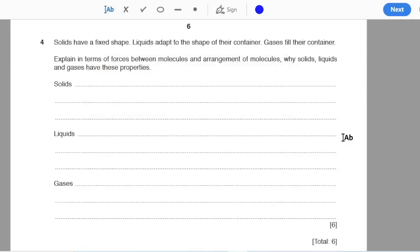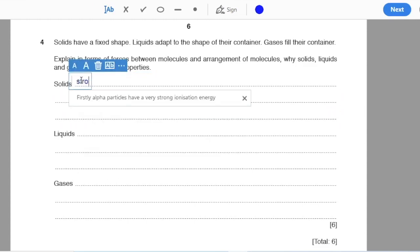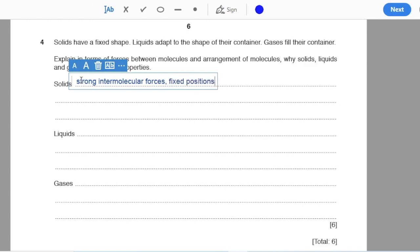Question four: solids have a fixed shape, liquids adapt to the shape of their containers, gases fill their container. Explain in terms of forces between molecules and arrangement of molecules why solids, liquids and gases have these properties. Since this question has been assigned six marks, this means two marks will be for each state of matter. Solid molecules have strong intermolecular forces. They are fixed in their positions and they have a lattice arrangement.